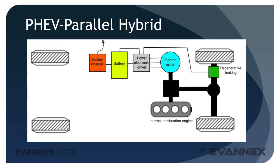Unlike the PHEV series hybrid, the PHEV parallel variant allows the internal combustion engine to directly drive the wheels, but also provides an electric motor that can drive the wheels as well. The electric motor may be implemented at very low speeds and will be discontinued when the battery is depleted — at that time the internal combustion engine will take over. The ICE operates similarly to a conventional vehicle and does not act to recharge the PHEV battery. The electric motor is driven by the battery charged from the grid via a charger, and a regenerative braking component translates kinetic energy into electricity to recharge the battery.